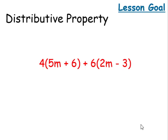Our lesson goal for today is to be able to use the distributive property. We're going to multiply the four over addition and subtraction. Four times five M and four times six, which will give us 20 M plus 24.